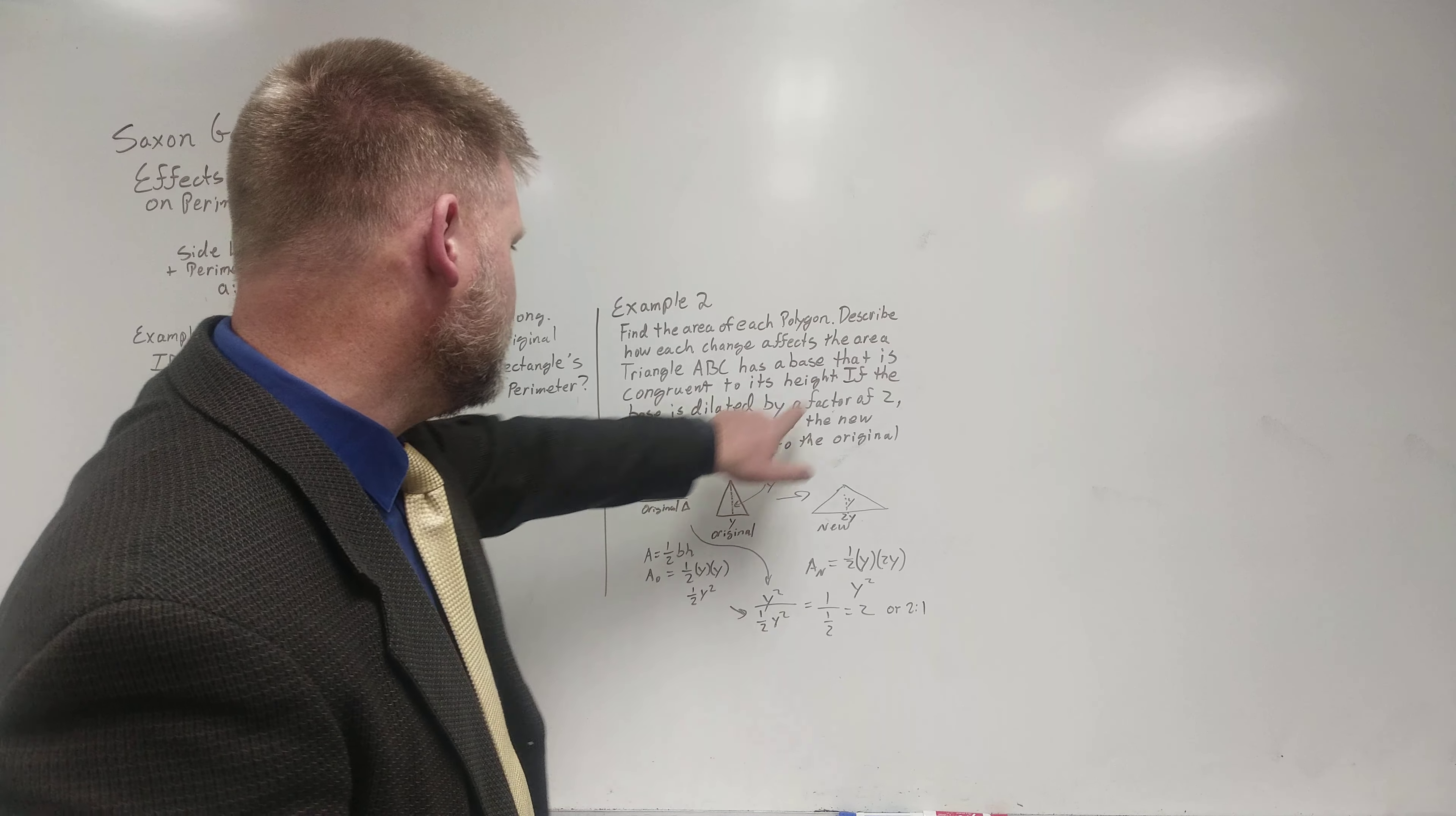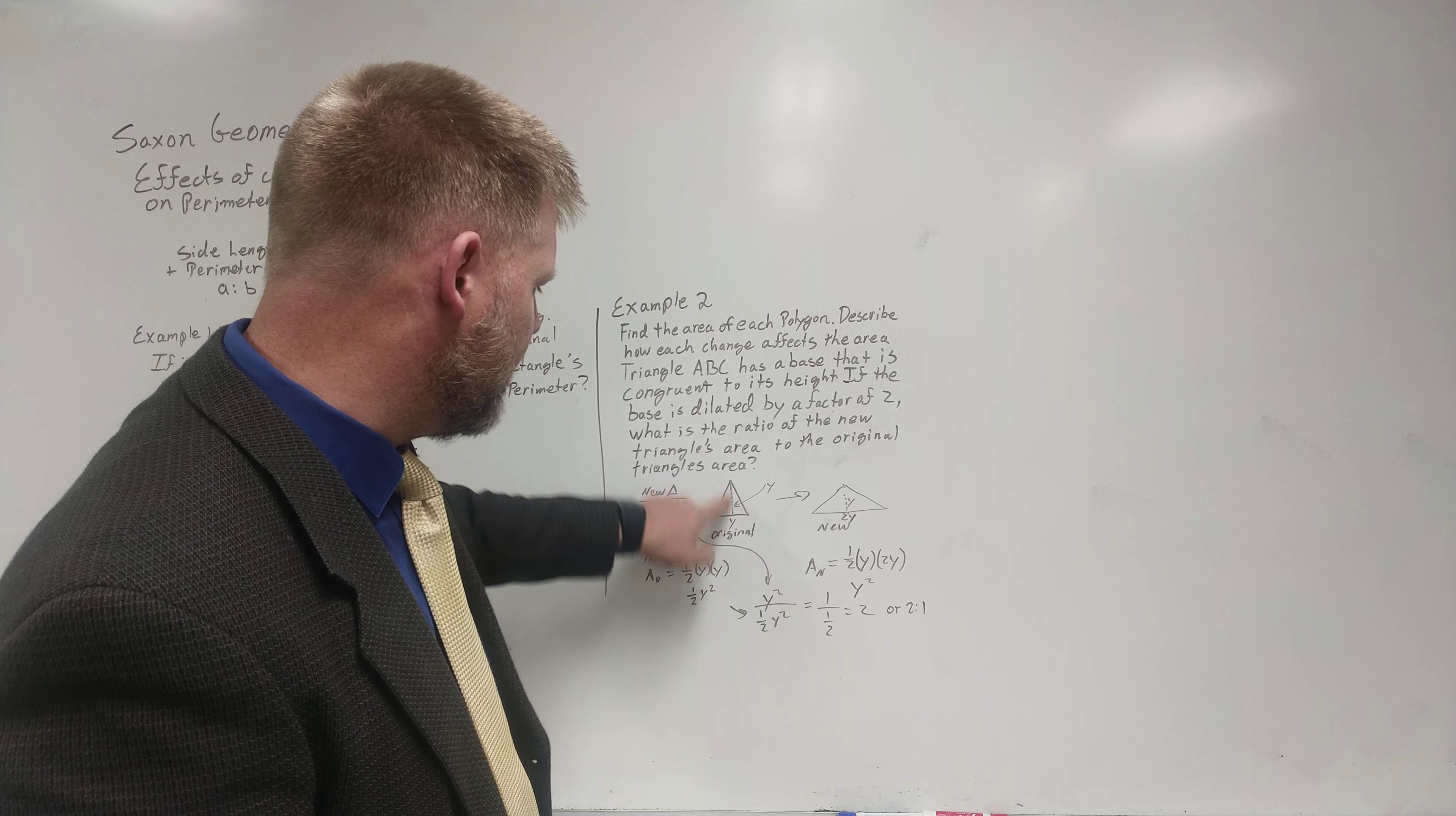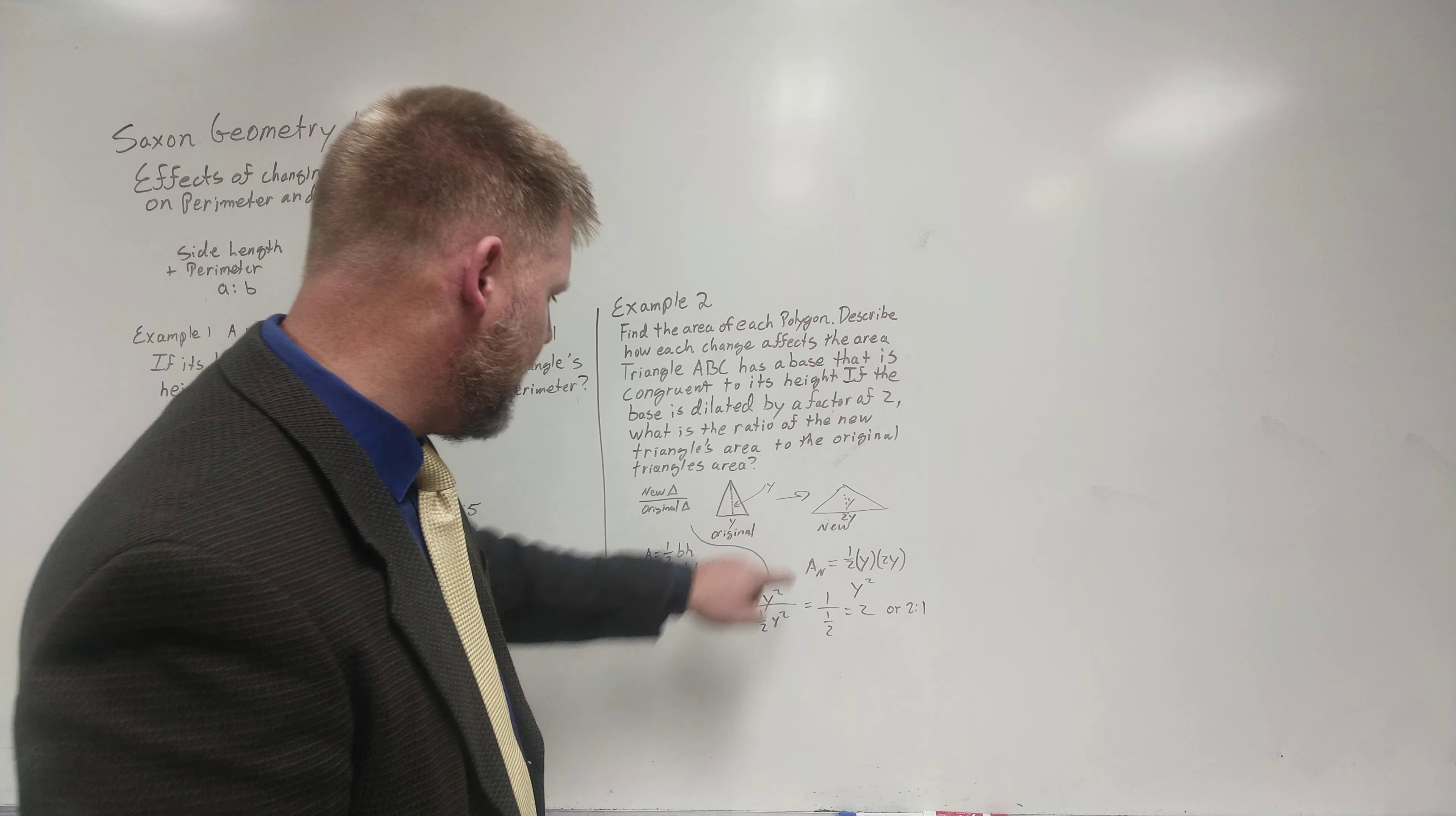Then I went ahead and drew some diagrams here to kind of understand what they were looking for. And they said that the first one that is congruent to its height. The base is congruent. So I said y and y, right? Height and base.